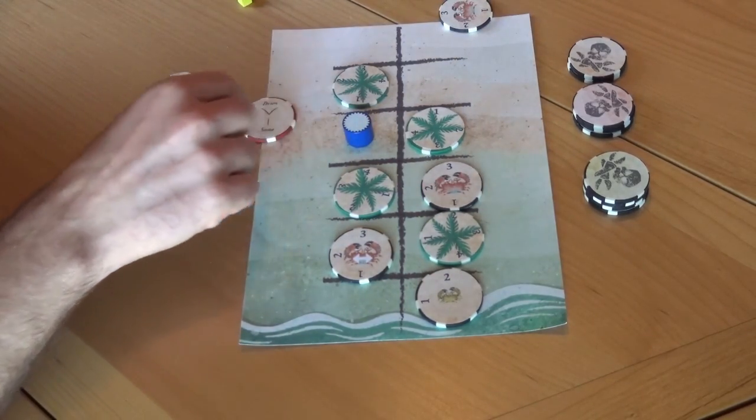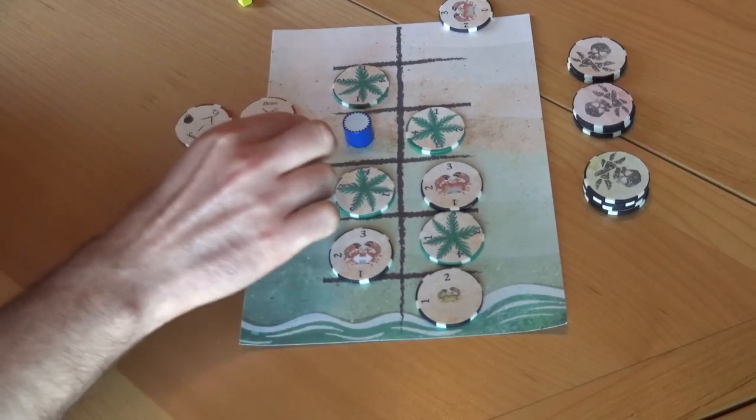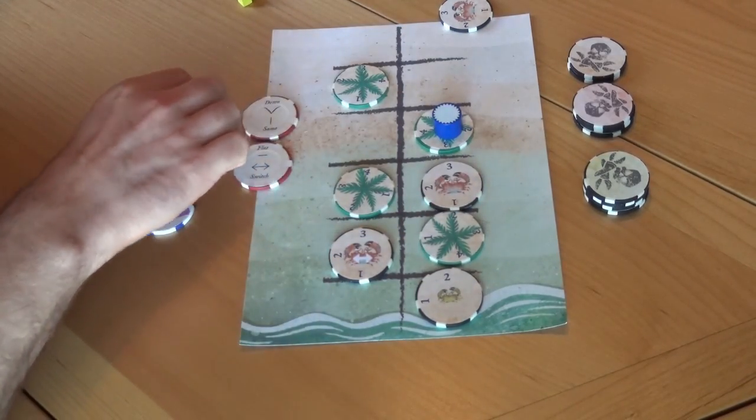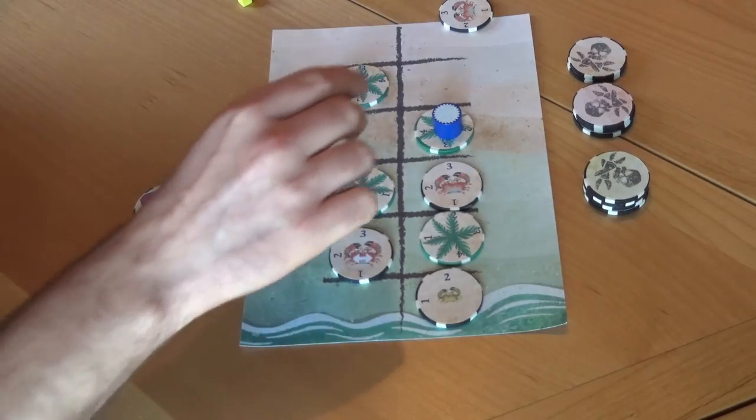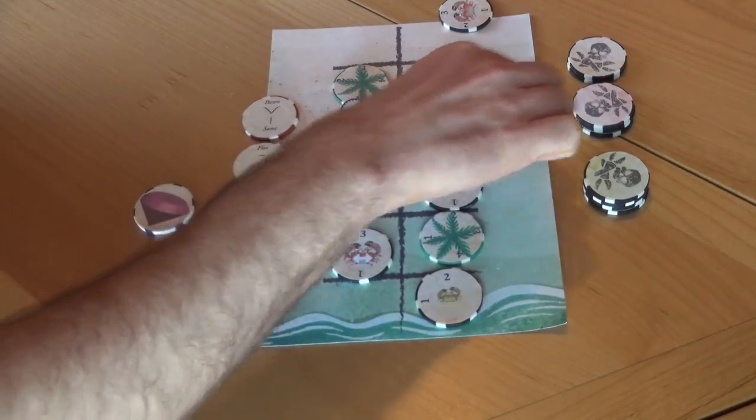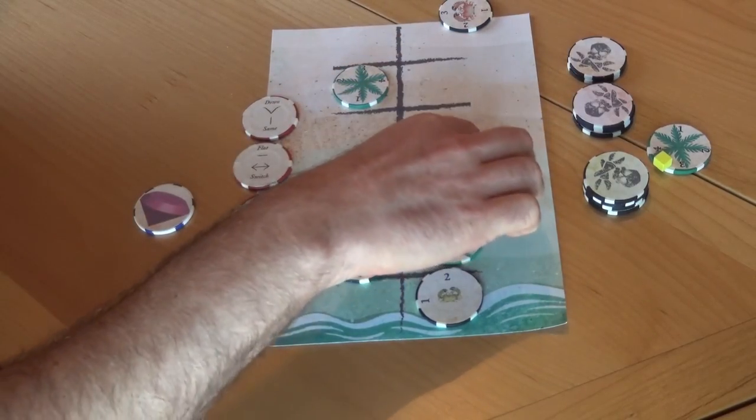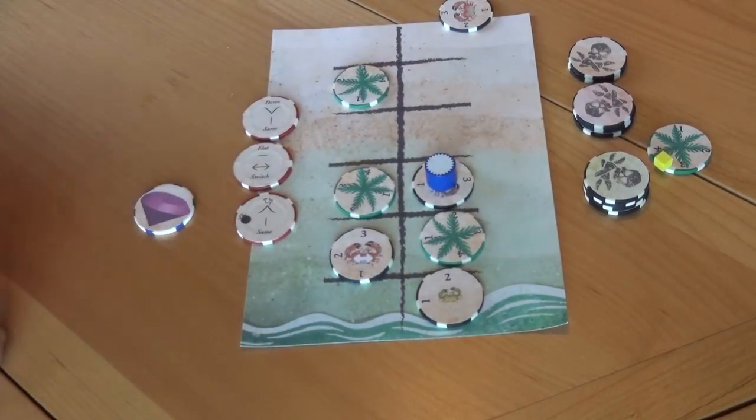We could use that. Let's do the flat switch to get over here first. This is dead. Now we're going to do up same. That leaves a bomb, but this is already gone. So now we go up, we come back down, we hit this crab. That's everything in my hand.